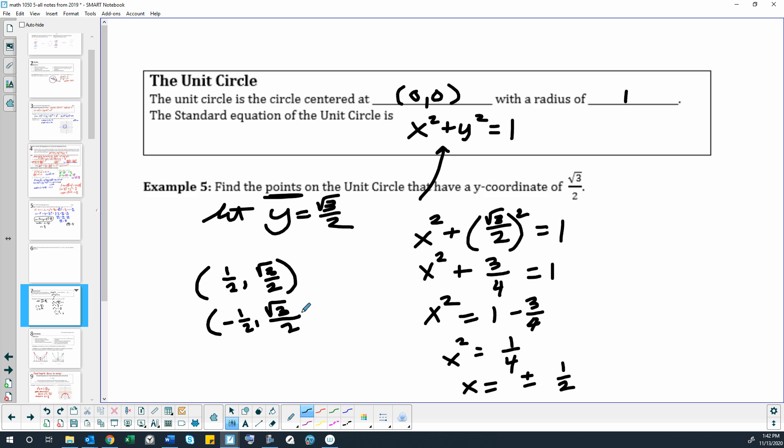I don't know if you guys did any trig last year in secondary 3. But those are points for a certain angle on the unit circle. It's like 30 degrees. And then negative 30 degrees, which would be like 330 degrees if you go the positive direction.